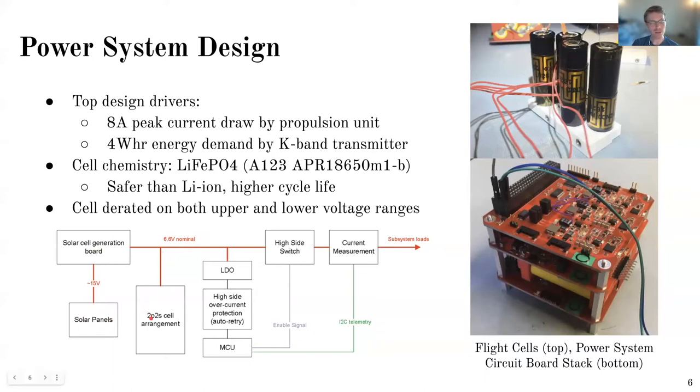The cells were 2P2S, so there's two parallel, two series arrangement. And then most loads in the satellite went through first a high side switch, and then there was a current measurement. So this combination here, there were multiple duplicate circuitries here. Just one is shown here. So essentially, then subsystem load. So other boards then got an unregulated bus voltage. And then as needed, they would then have point of load converters.